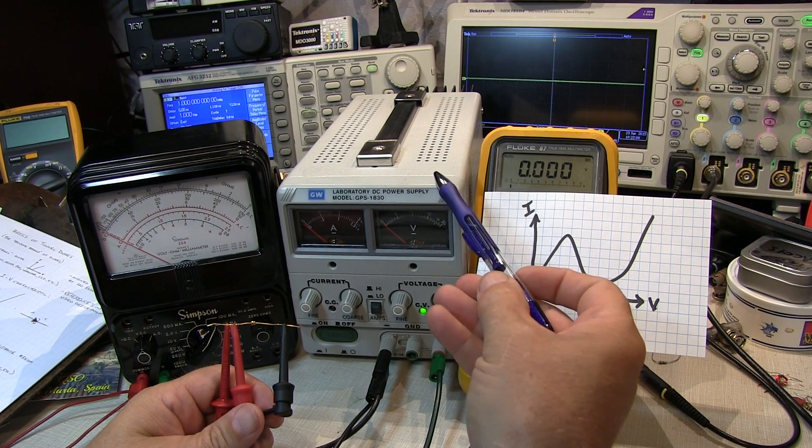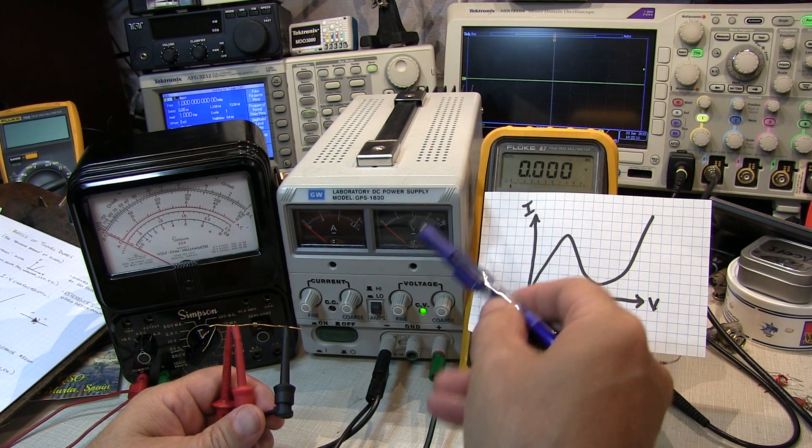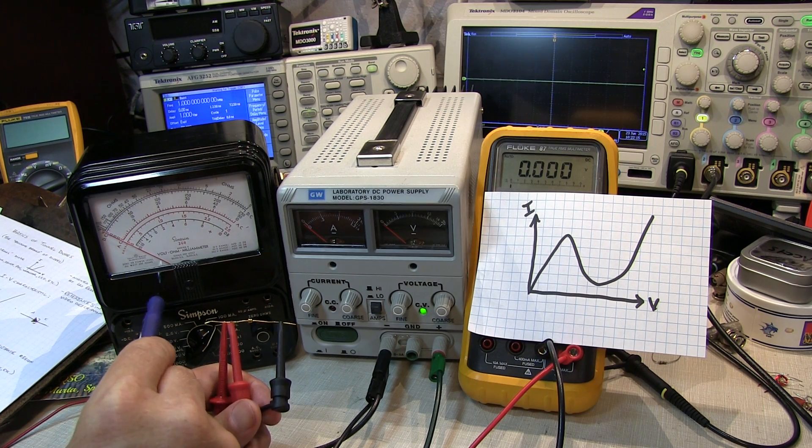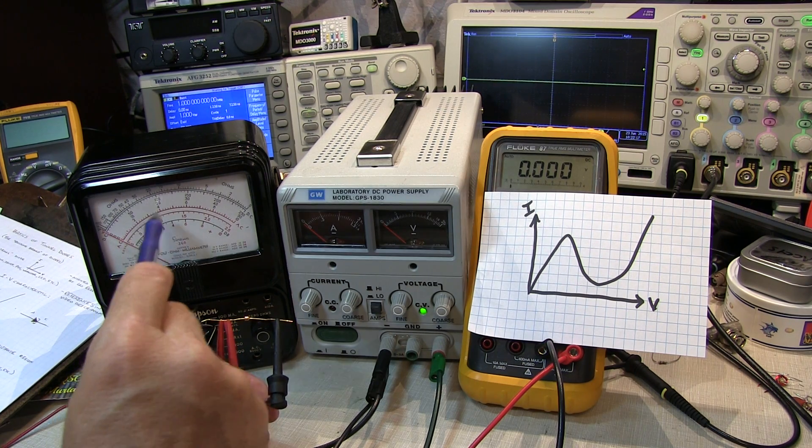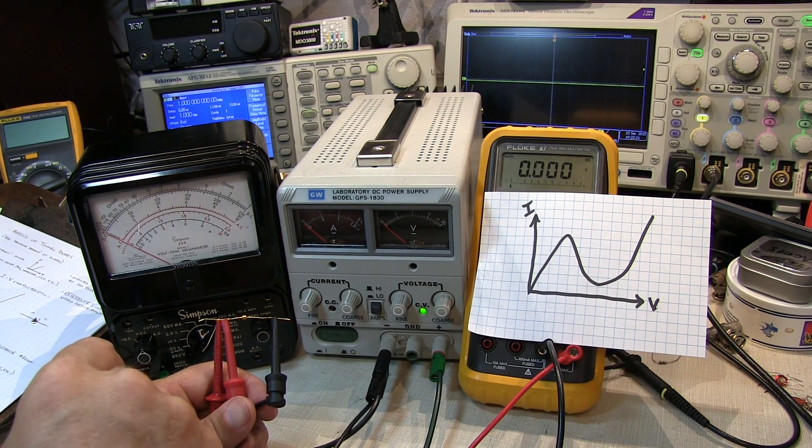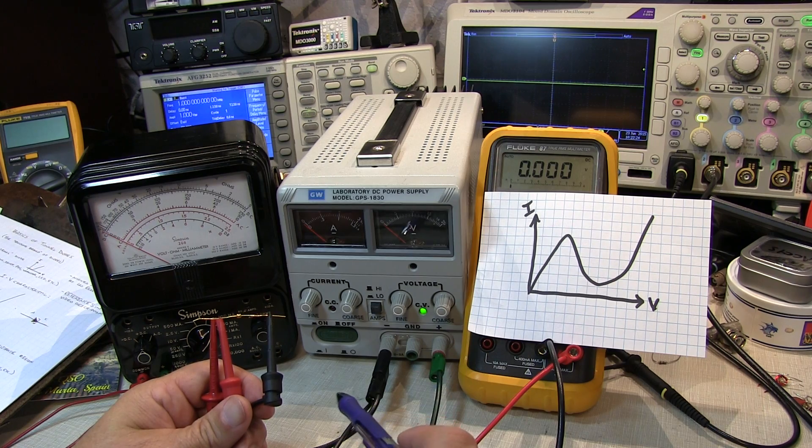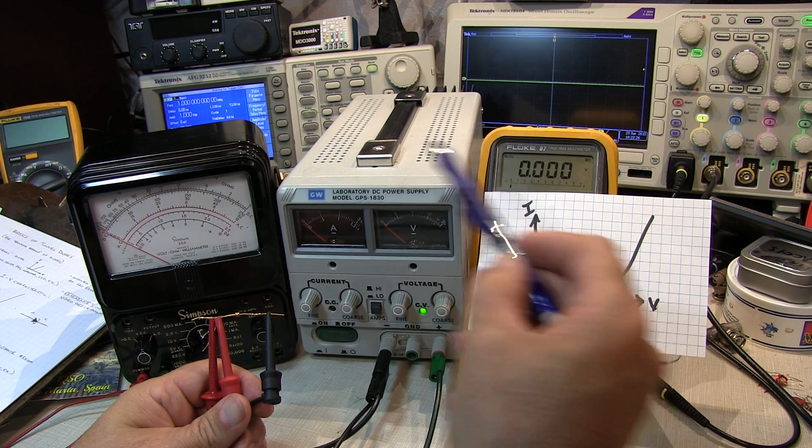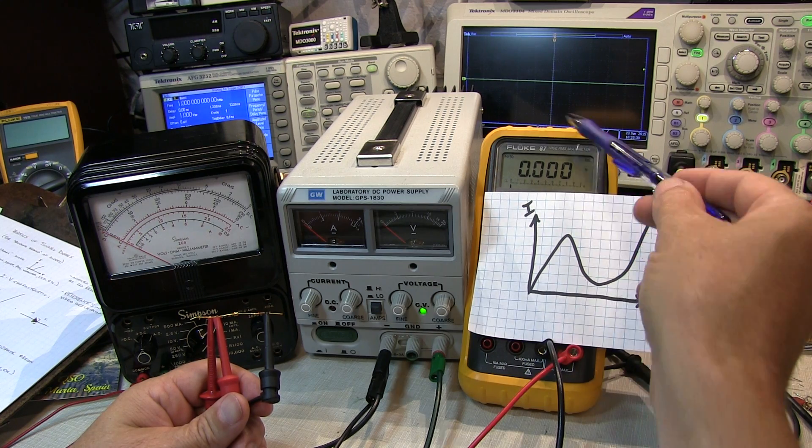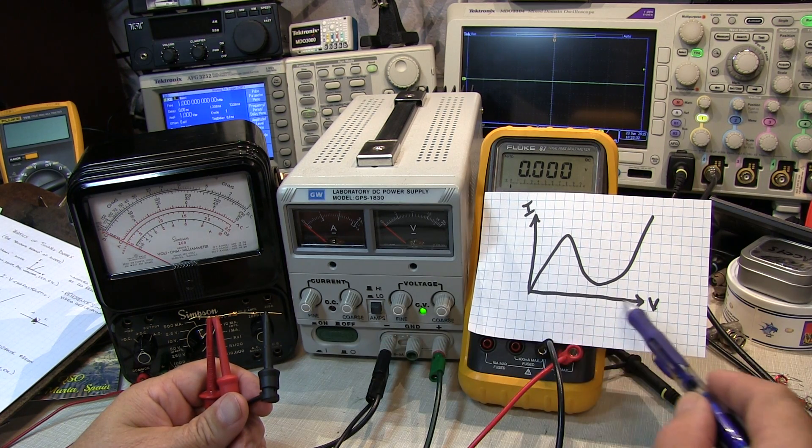So let's set this very simple thing up here and take a look at that real quick. I've got this variable DC power supply set up here, sending its voltage essentially through the Simpson 260 on the 10 milliamp scale, so this is being used as an ammeter here to measure the current that comes out and goes through the diode and back to the power supply. That will monitor the current through the diode, and then this multimeter is set up across the diode to measure the voltage.